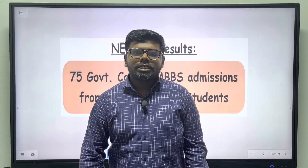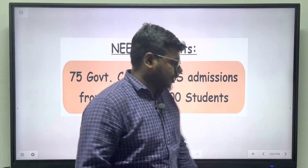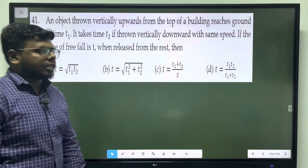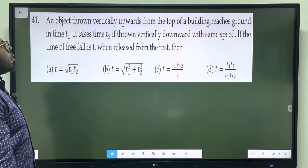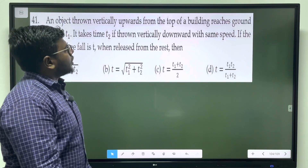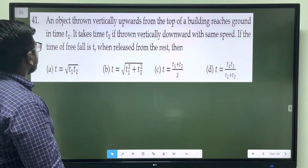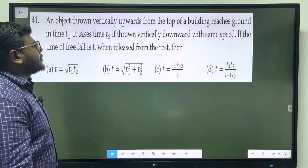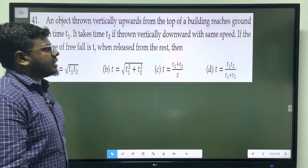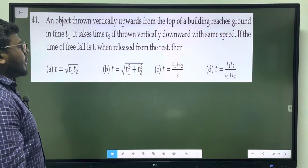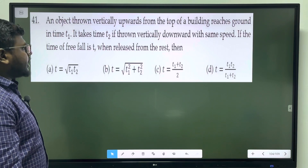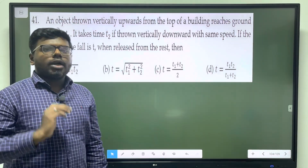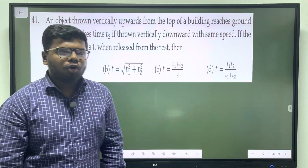Welcome students. It is my next question. It is one dimension. An object thrown vertically upwards from the top of a building reaches ground in time t1. It takes time t2 if thrown vertically downwards with the same speed. If the time of free fall is t when released from rest, then what is the relation between t, t1, and t2?